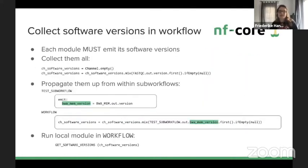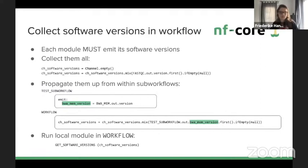You will also need to collect all software versions in your workflow, since each module must emit its software version so we can track all tool versions. You can collect them by creating an empty channel and mixing the versions in. From subworkflows, you propagate versions up using named emit — for example, accessing the BWA version as test_subworkflow.out.bwa_version in your workflow script.